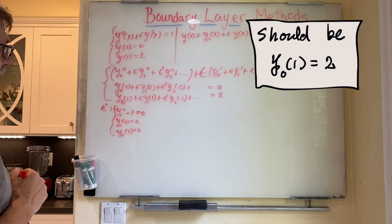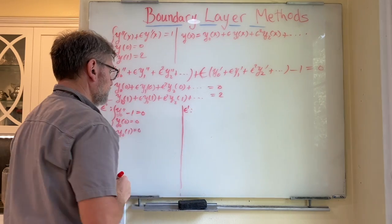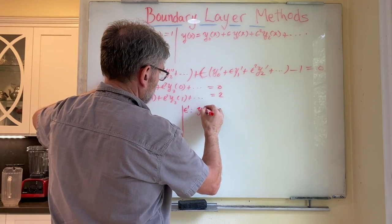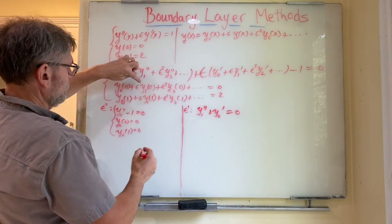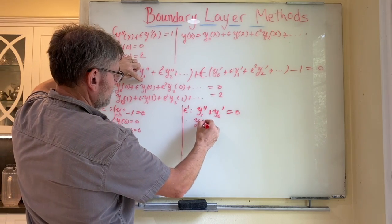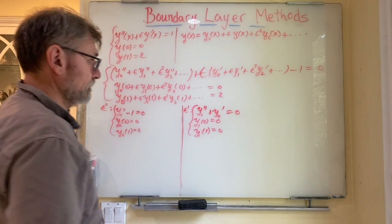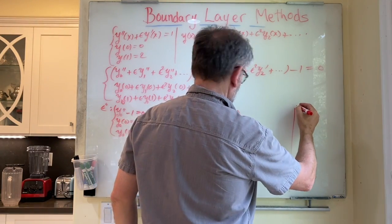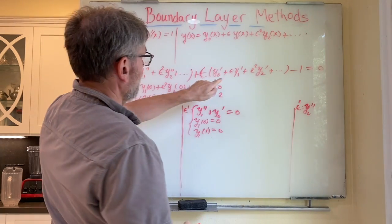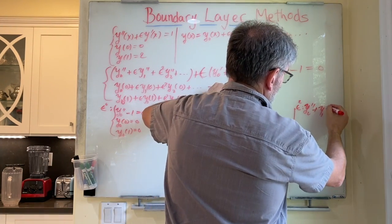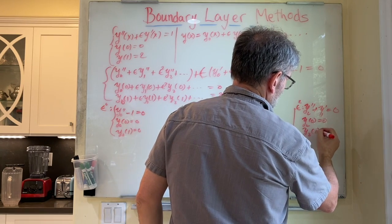This is the problem at epsilon equals zero. Collecting terms at order epsilon to the power one, we get y1 double prime plus y naught prime equals zero, subject to y1 of zero equals zero and y1 of one equals zero. At order epsilon squared, we have y2 double prime plus y1 prime equals zero with boundary conditions y2 of zero equals zero and y2 of one equals zero.